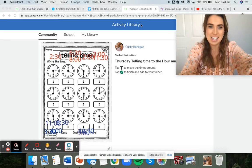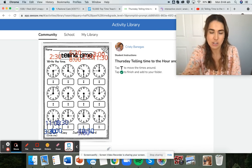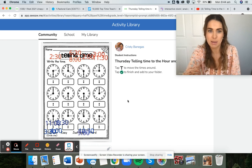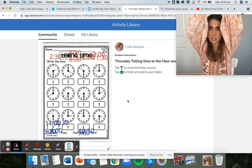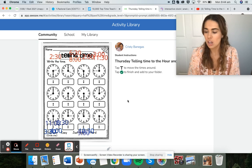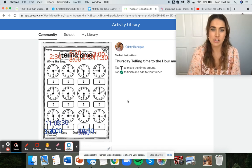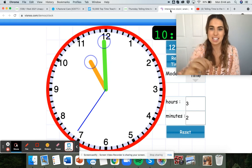Today I have for you a seesaw activity that looks like this. I want you to drag the times to the correct clocks. We've got some O'clock. Remember, O'clock is the big hand pointing straight up to the 12. And some half past. Half past is the big hand pointing straight down to the 6.